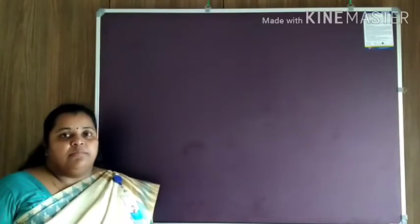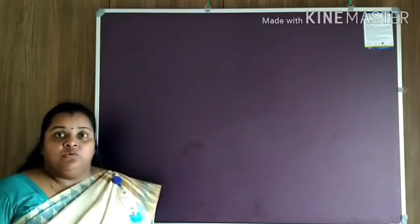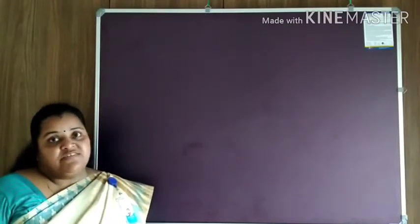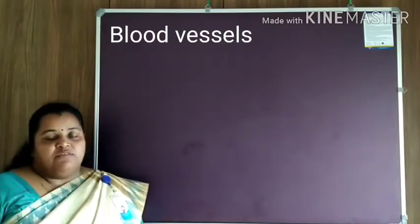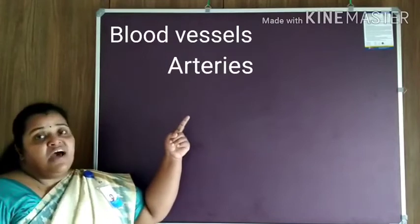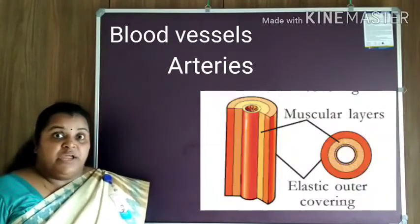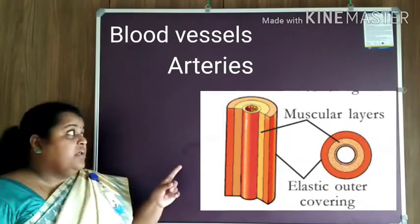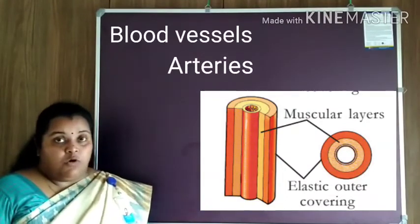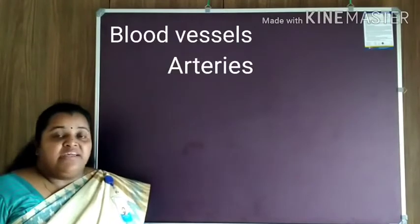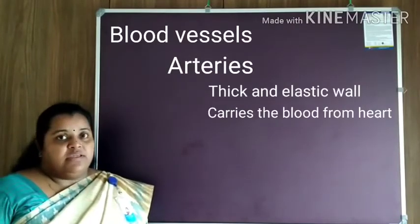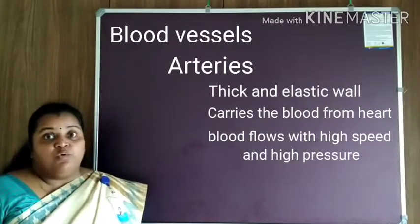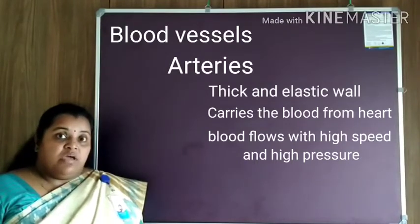You all know that the blood circulates all over the body through blood vessels. Let us have a closer study about the different types of blood vessels. The first type is known as arteries. Arteries are made up of thick, elastic, muscular walls. They carry the blood away from the heart, and the blood always flows with high pressure and high speed.